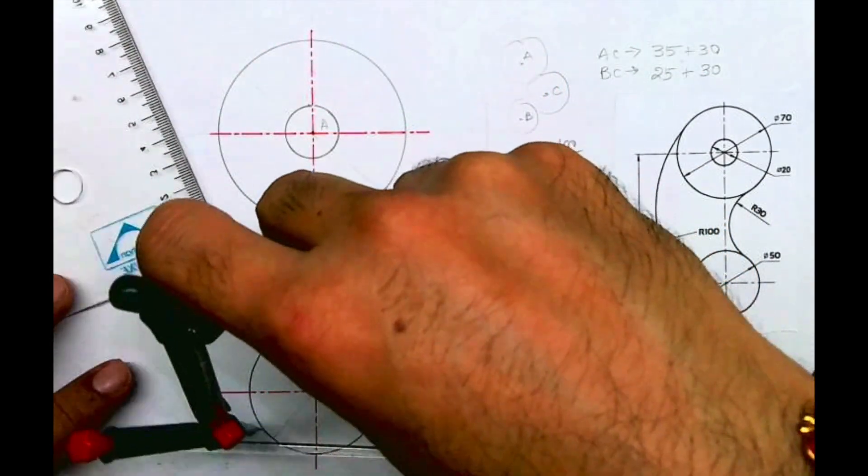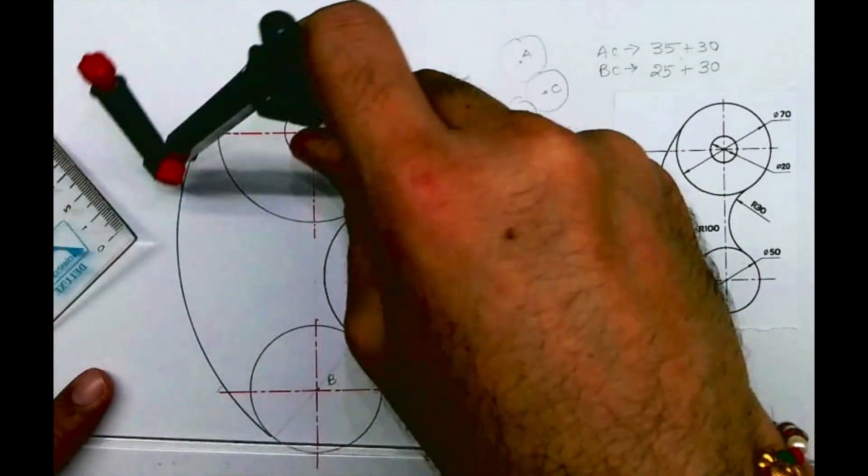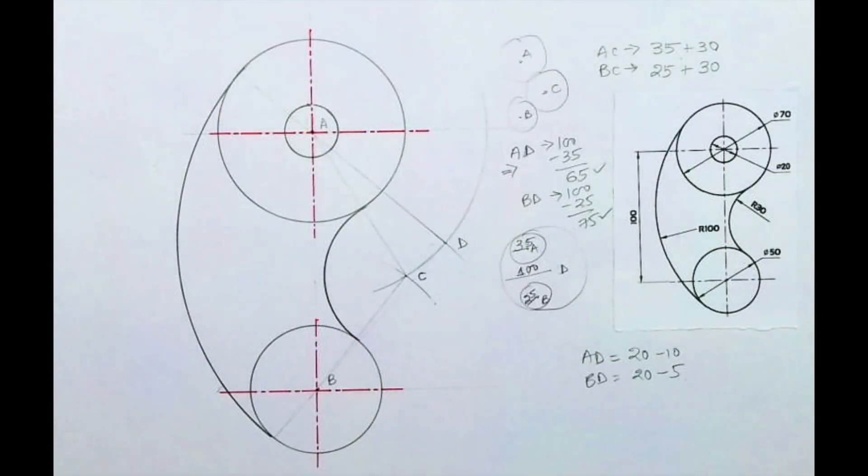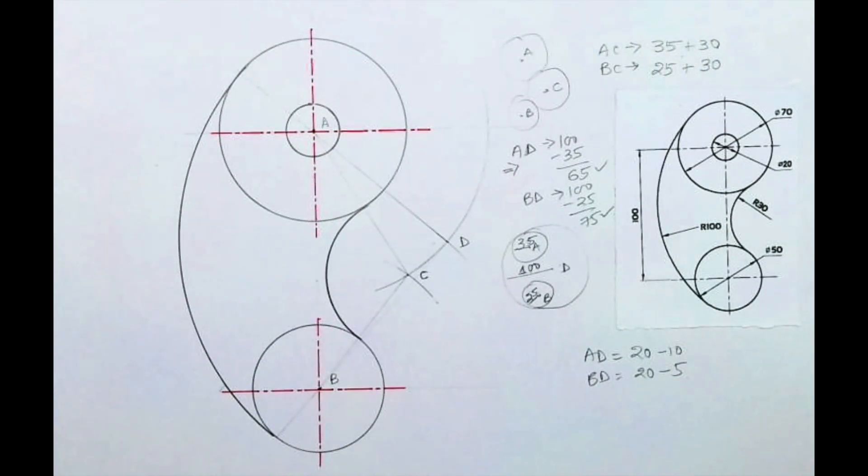We got the required circle, the required arc. I hope everyone understood how to draw external as well as internal arcs. Thank you.